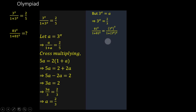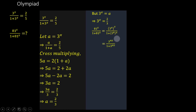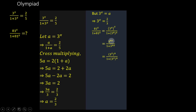Now, 81 to the power x over 1 plus 81 to the power x — we can express 81 as 3 to the power 4, all to the power x, and do the same in the denominator: 1 plus 3 to the power 4, all to the power x. Applying the law of indices, which says that when a power is raised to a power you multiply the exponents, we get 3 to the power 4x over 1 plus 3 to the power 4x. This can also be rewritten as 3 to the power x, all to the power 4, over 1 plus 3 to the power x, all to the power 4. We are just rewriting it in a way that relates to this question.